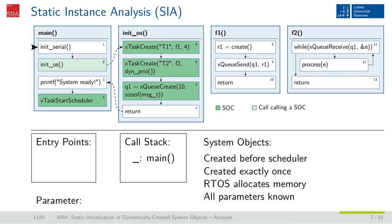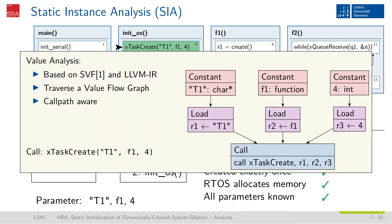This first instruction is the initialization of the serial interface. This instruction is not marked as relevant, so we can ignore it and continue to the next instruction. The next instruction is the call to the initOS function, which is marked as relevant. Hence, we push it on our call stack and step into this function. Inside the initOS function, the first instruction is the call to xTaskCreate, which is a system object creating system call. Hence, we want to acquire all its parameters. Therefore, we use the static value flow analysis, short SVF, which works on the LLVM code and delivers a call path-aware value flow graph, which we use to query the arguments of this call.